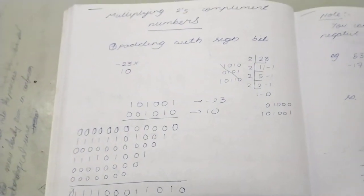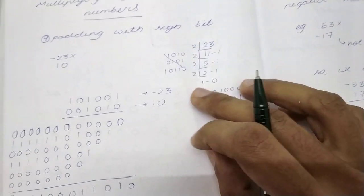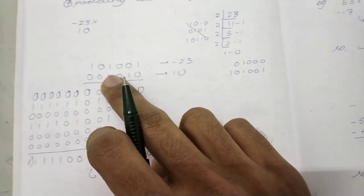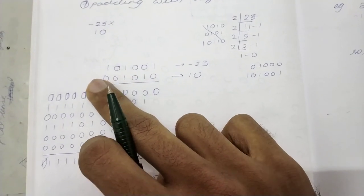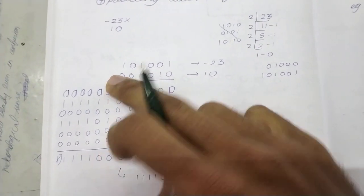So let's say we want to multiply minus 23 into 10. So we take 23, then turn it to 2's complement representation. 10 is also 2's complement representation, we pad it with 2 sign bits: 0, 1, 0, 1, 0, and one more 0.